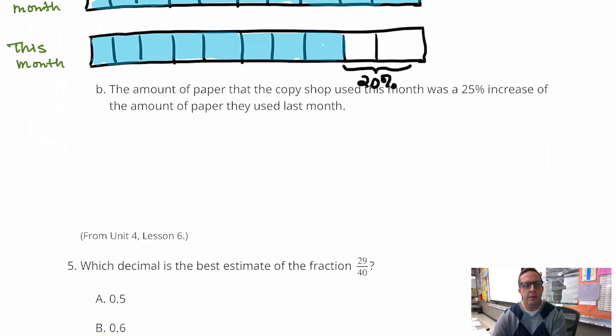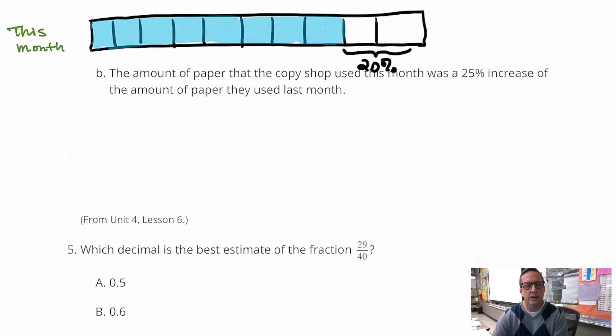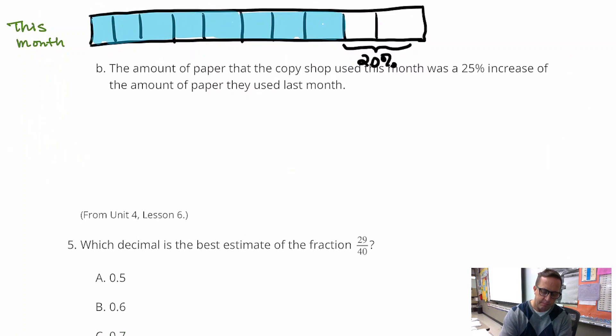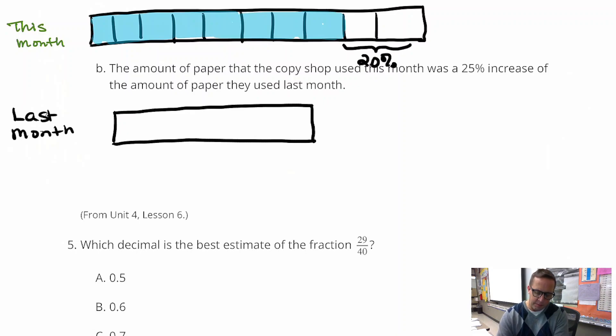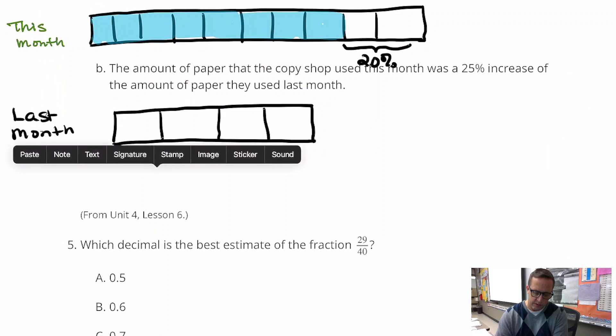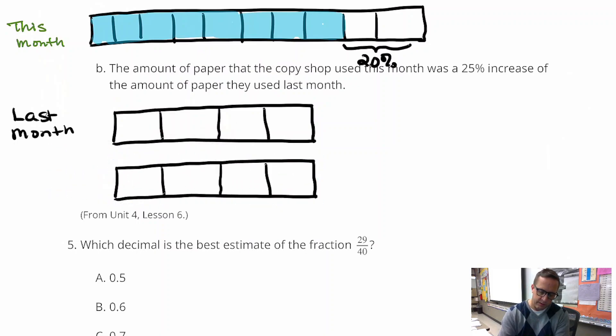For B, the amount of paper that the copy shop used this month was a 25% increase in the amount of paper they used last month. Okay, so we're going to kind of do a similar thing here. I don't think I have to necessarily make it as big. Though this was last month. And I'm going to break that up into fours, because it's talking about 25%. Okay, so that's the amount of paper they used.